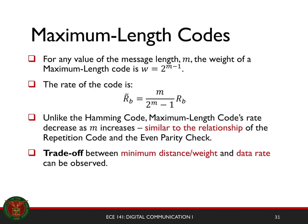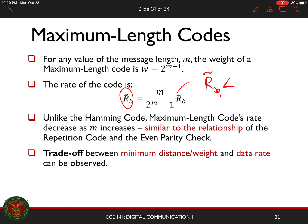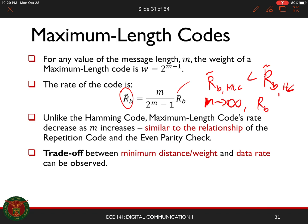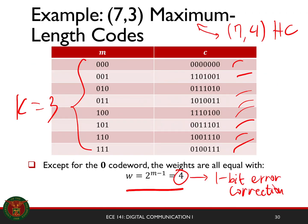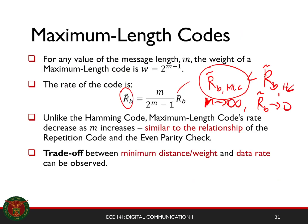A property of your maximum length code is that its data rate is less than the data rate of your Hamming code. And as M approaches infinity, the data rate approaches zero. The trade-off is that even though you have a lower data rate, your code is more reliable because it has a larger minimum distance compared to your Hamming code. Larger minimum distance means better reliability.